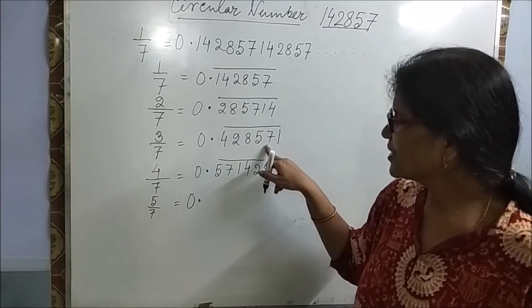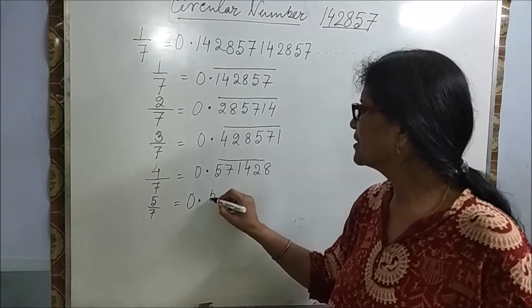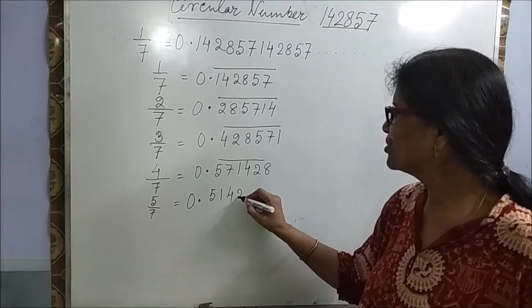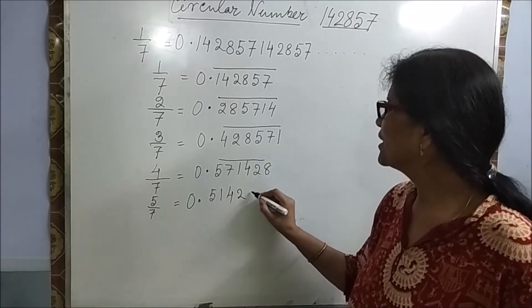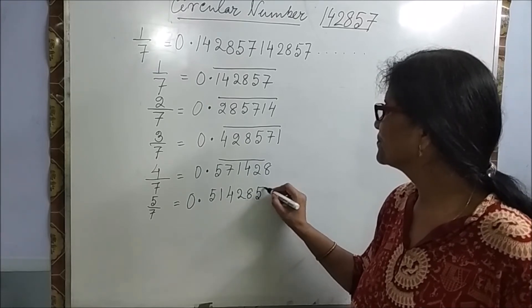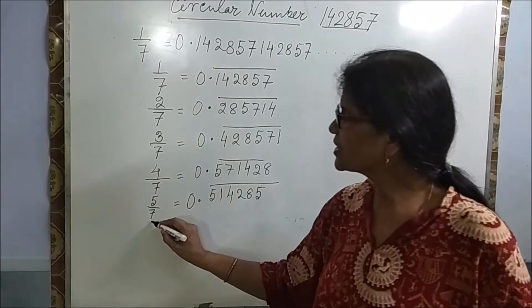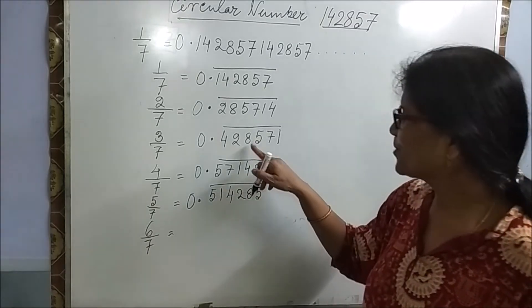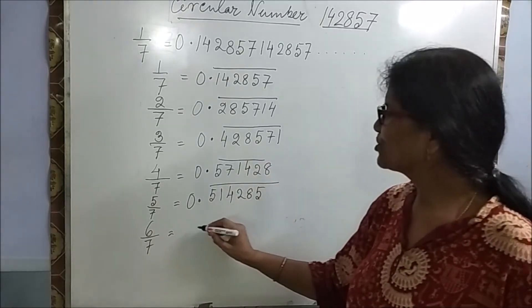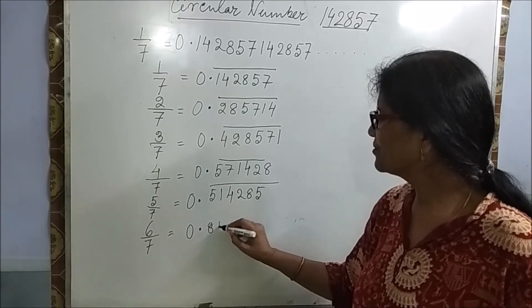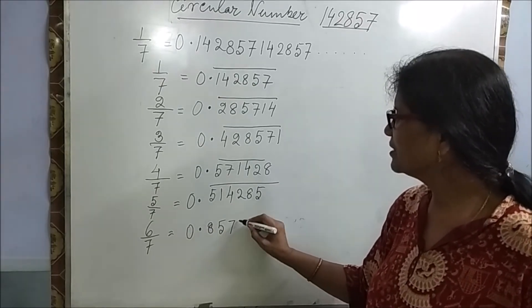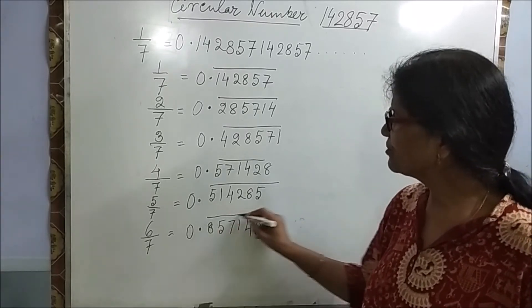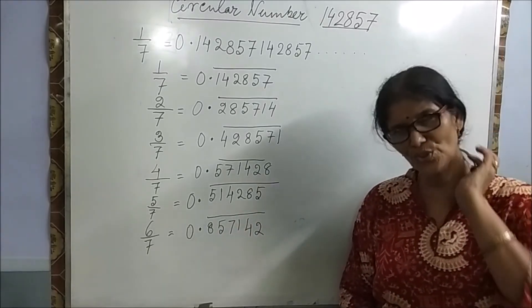You guess for 5 by 7. 5 by 7 will be? It will start from 7. So 7, 1, 4, 2, 8, 5. That means without division we can do this question.